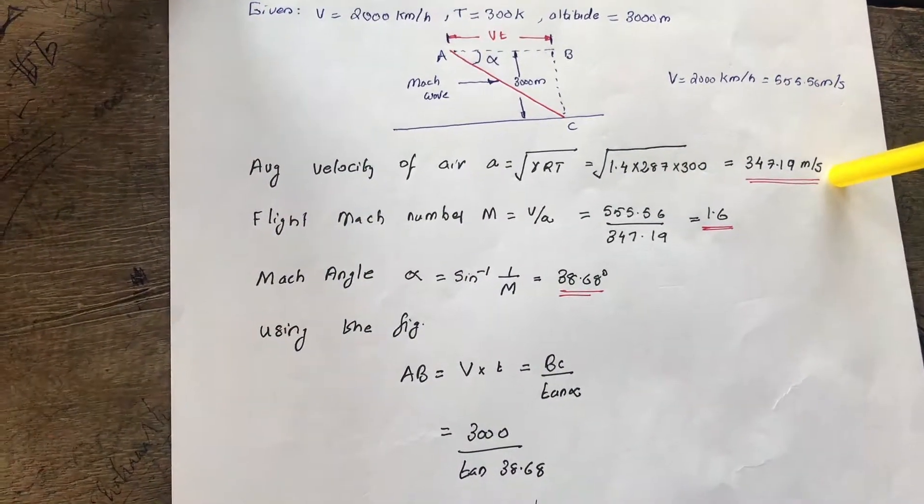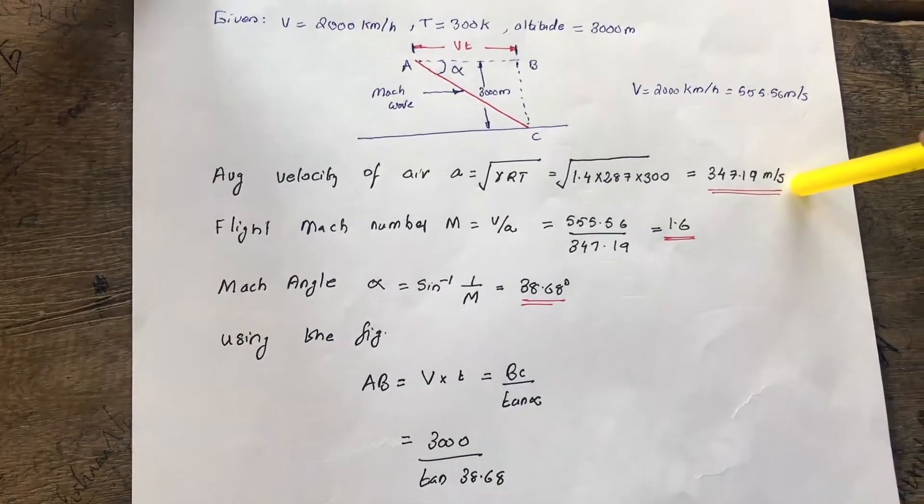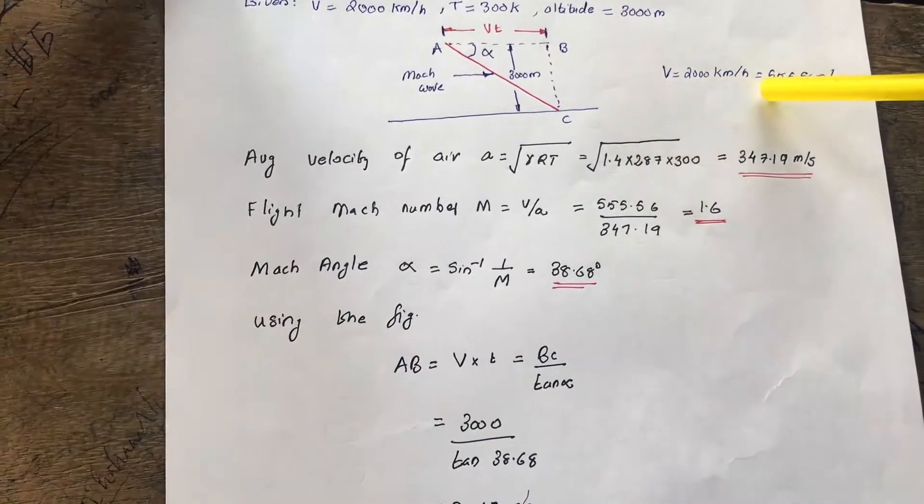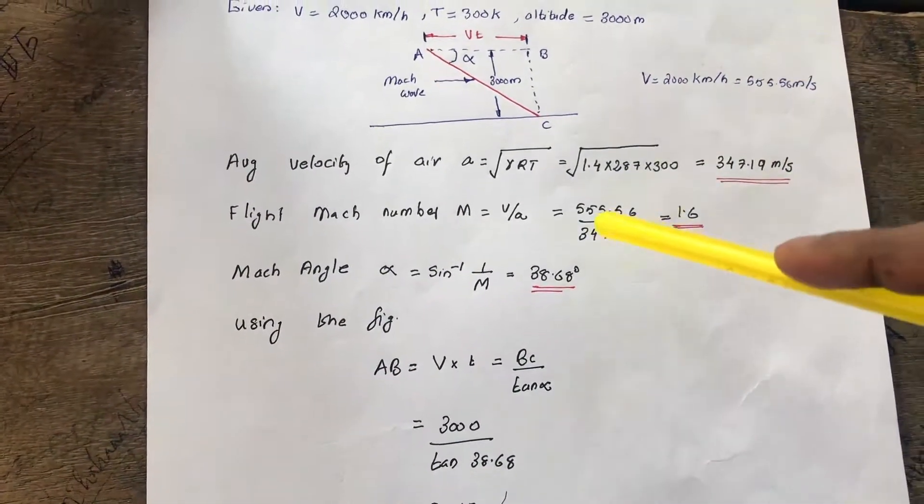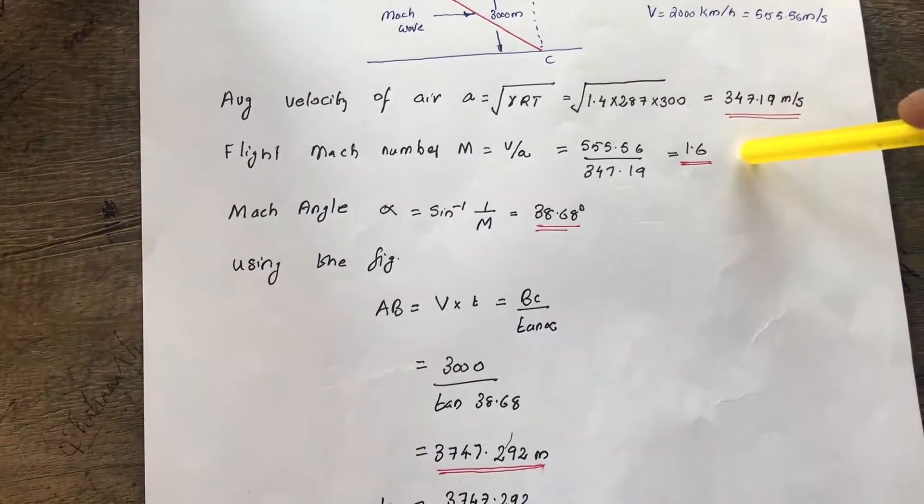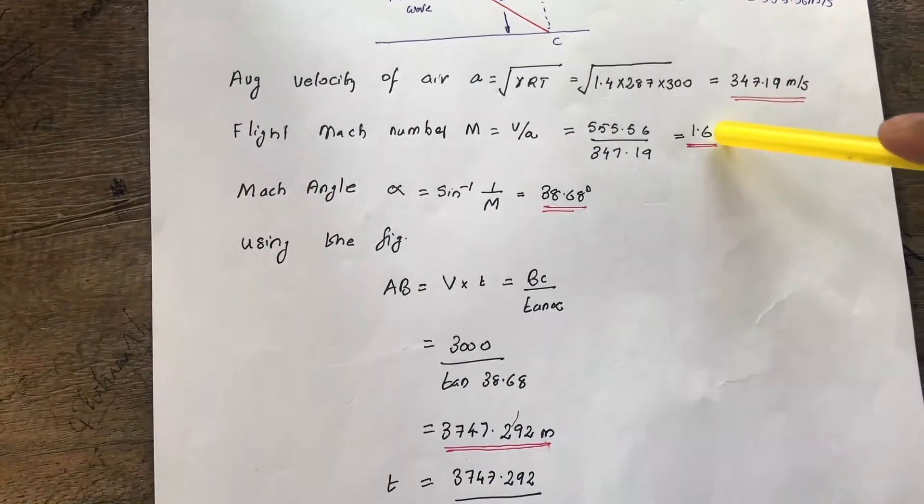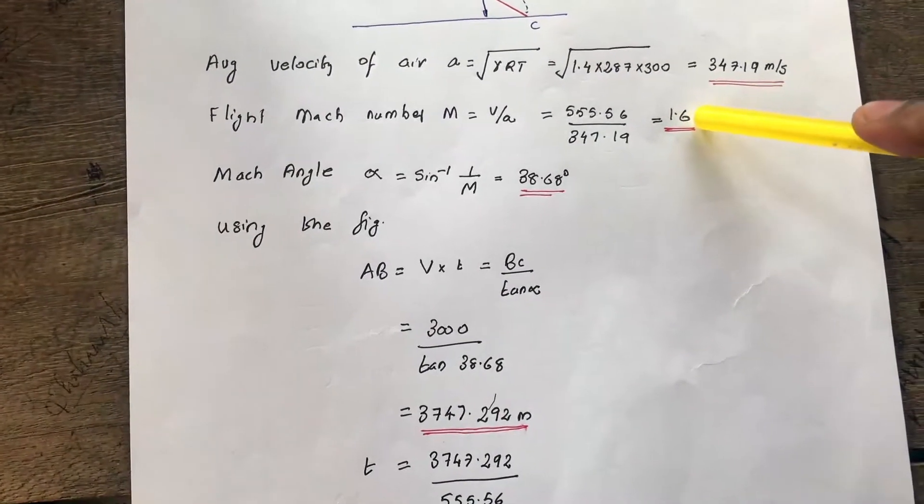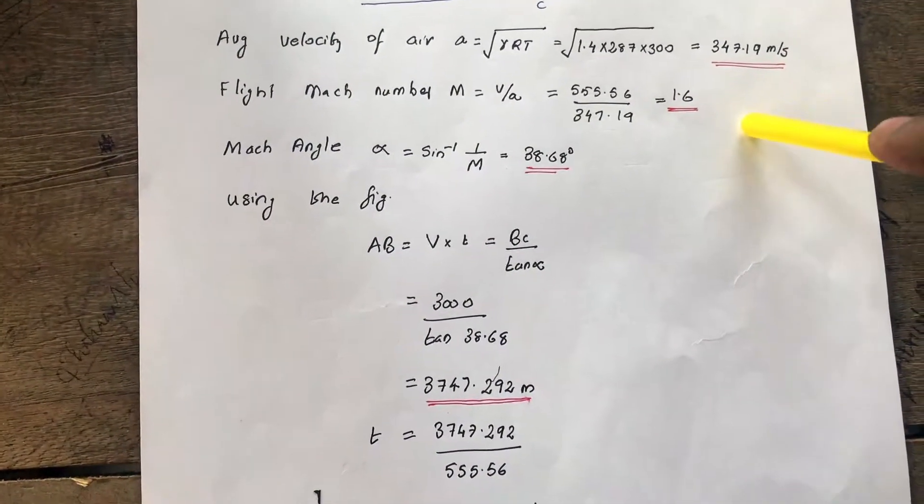We can find the flight Mach number now. We know Mach number equals V by a. V is given as 555, and a we found out. We can substitute here and find the flight Mach number as 1.6, which is a supersonic flight. The Mach number is greater than 1, hence it is 1.6.